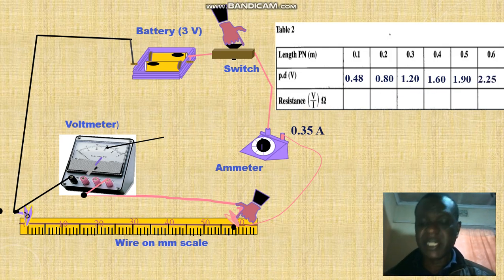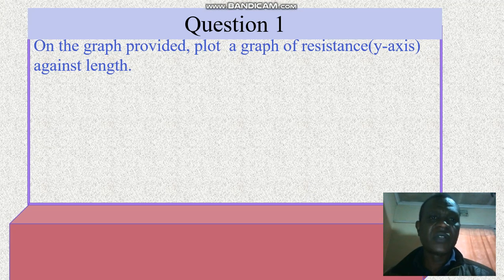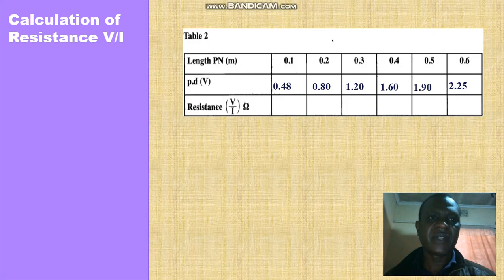Now you need to get the resistance. So on the graph provided, plot a graph of the resistance y-axis against length. We are graphing the graph. Now we do the calculation so that we get the resistance.